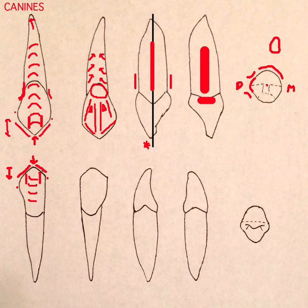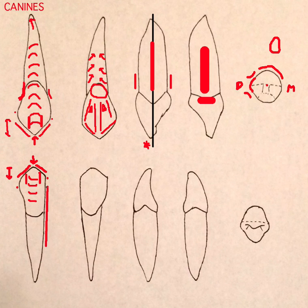With the mandibular canine, the mesial side is really straight from the crown through the root, almost all the way down — just a very straight line there.